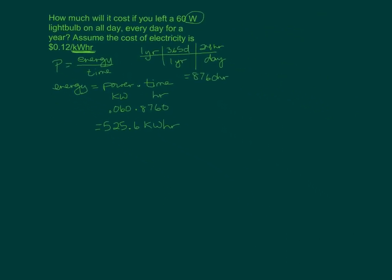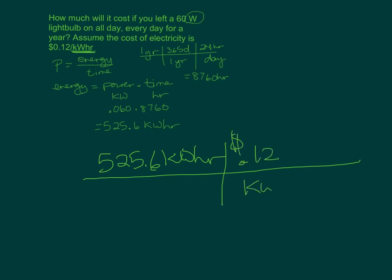Now let's find out how much that costs. We had 525.6 kilowatt hours, but we were being charged 12 cents per kilowatt hour. If we take that and multiply it by 12 cents, that light bulb is costing us $63.07 every year.